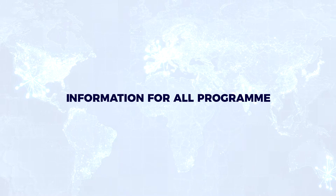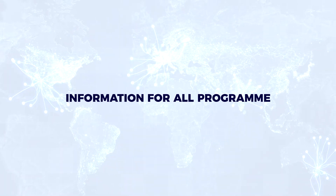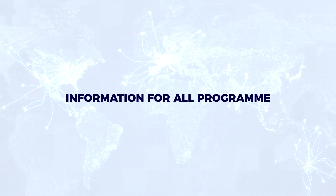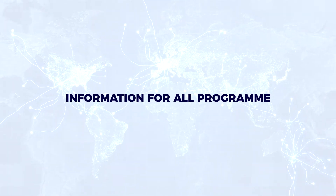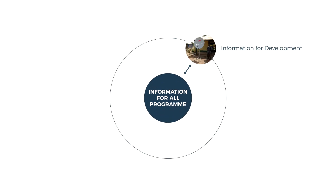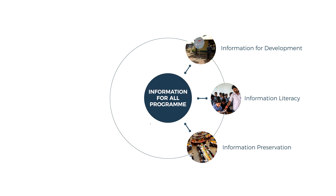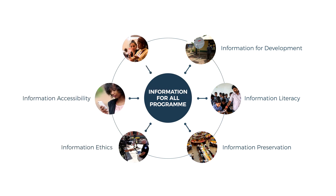The Information for All program is a UNESCO intergovernmental program that supports member states to implement information policies and knowledge strategies in a world increasingly using ICTs. The program concentrates its efforts on six priorities: information for development, information literacy, information preservation, information ethics, information accessibility, and multilingualism.